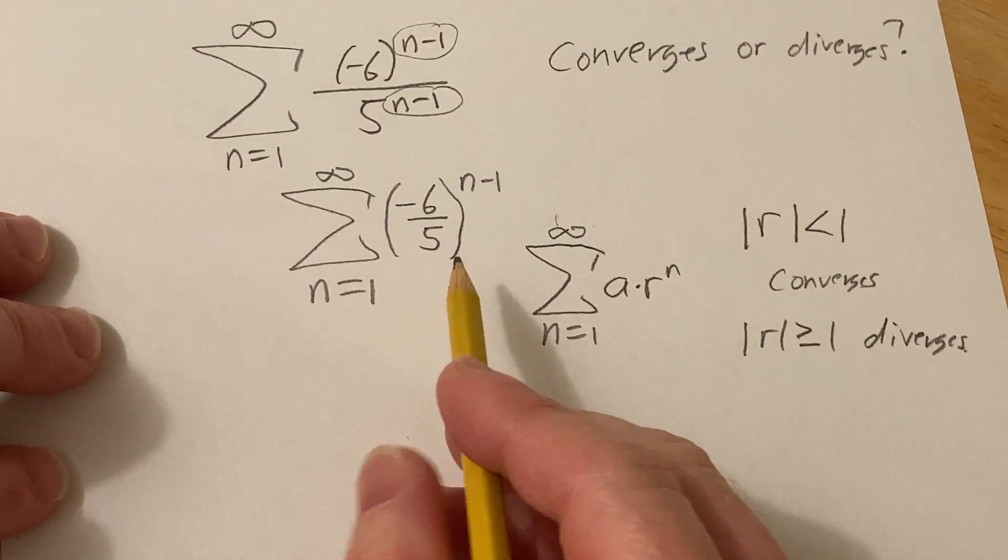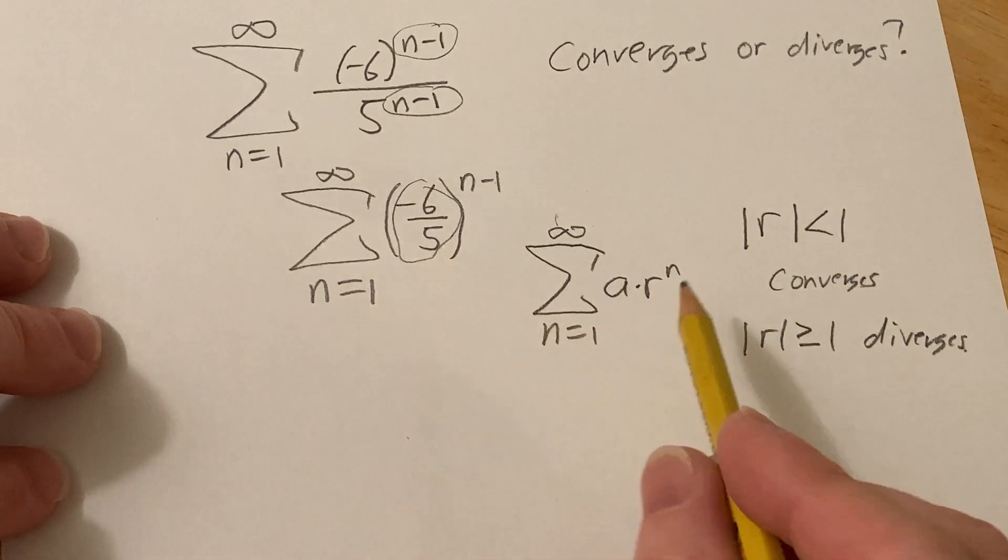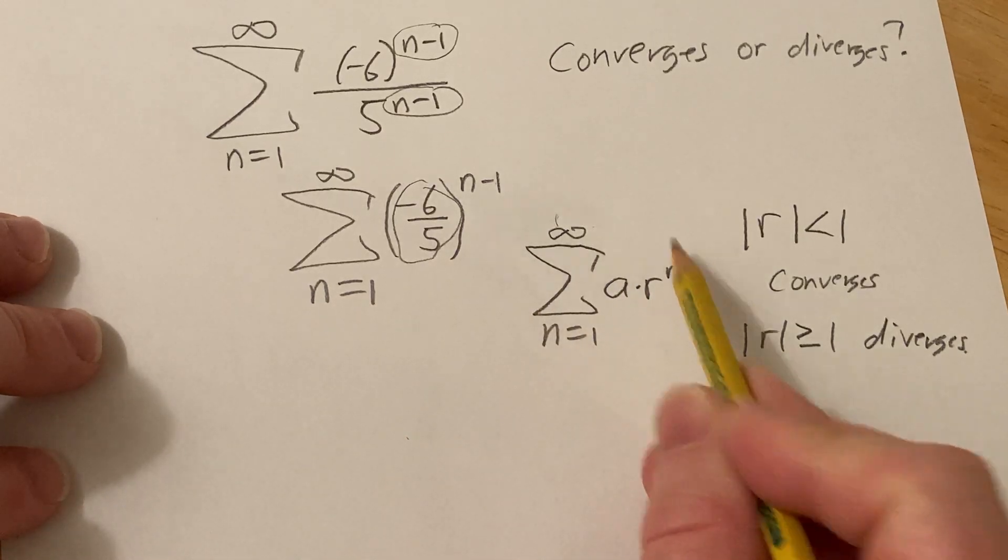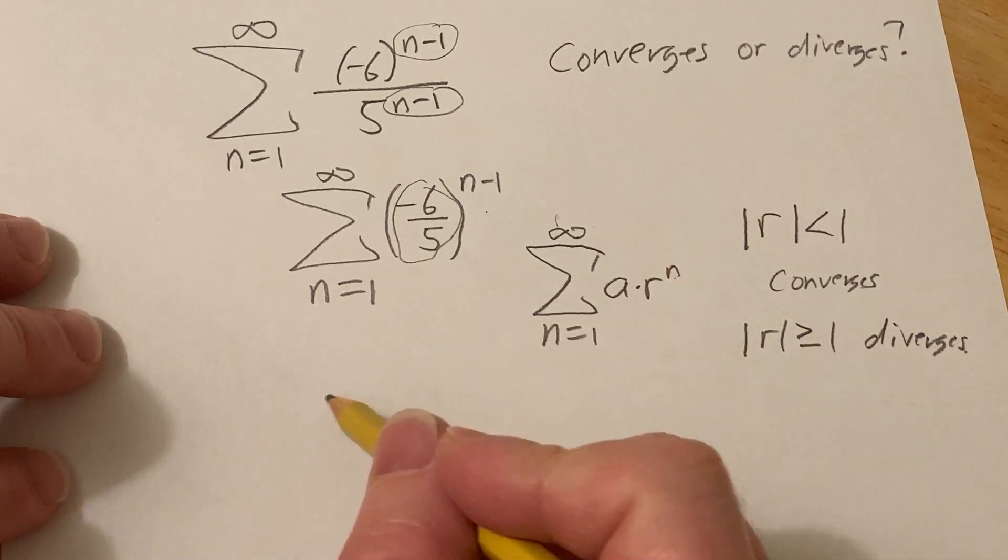So in this case here, you see the r. It's this piece here. It's the piece that's being raised to the n-th power. If you're wondering about the n and the n-1, it's not really going to matter, because you could do something like this. Watch.